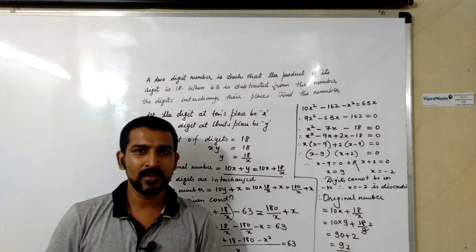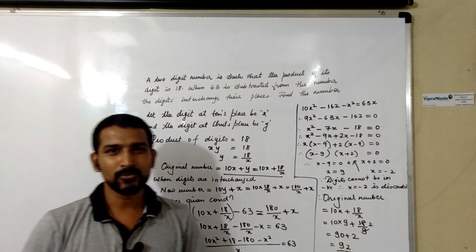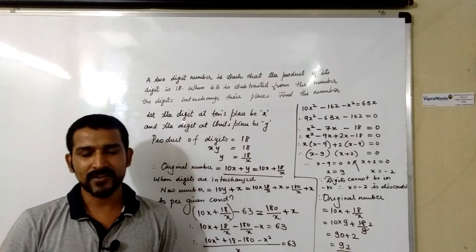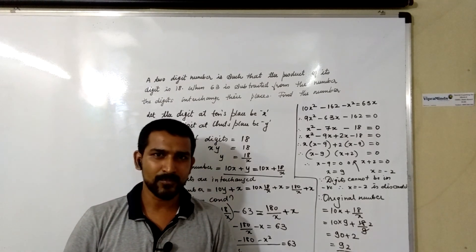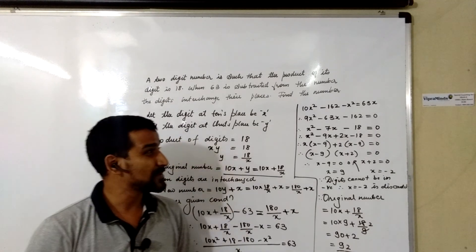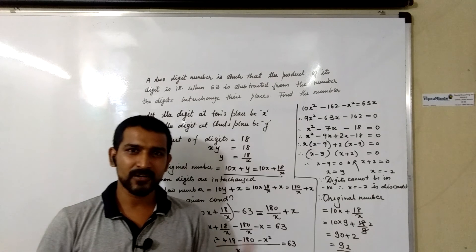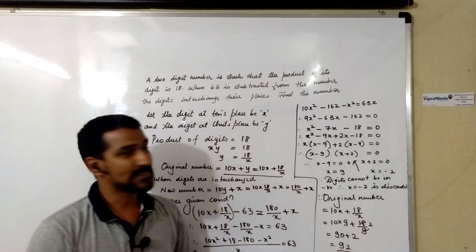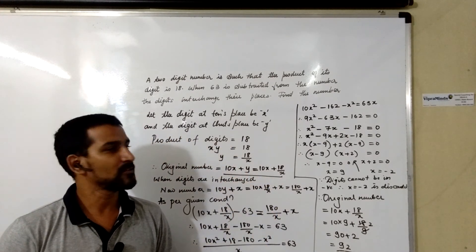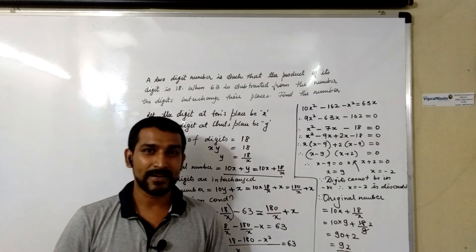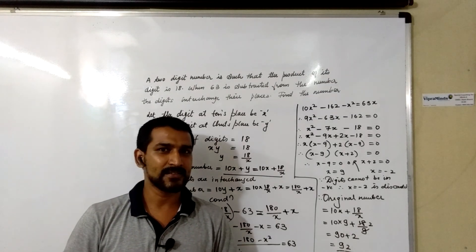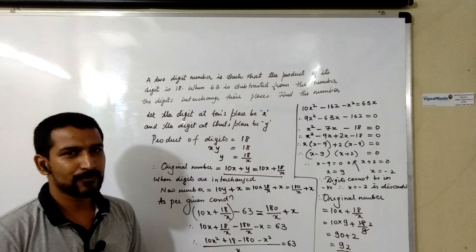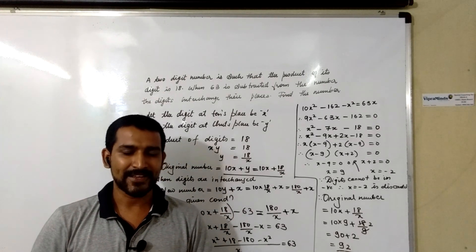This is how we solve word problems based on two-digit numbers. In the next video, we are going to see more examples based on the speed of trains, as well as more two-digit number examples, because students find difficulty with this type of question. Hope this is helpful for your maths. Thank you.